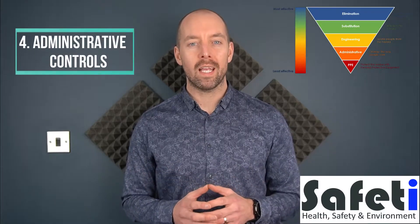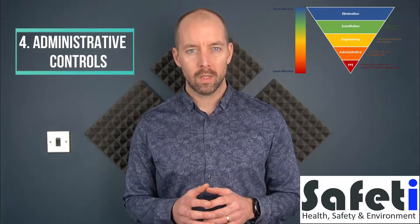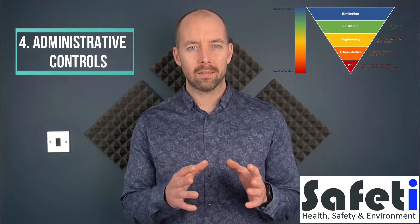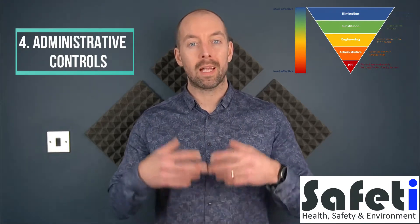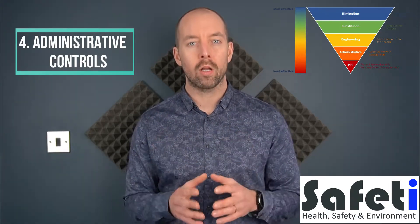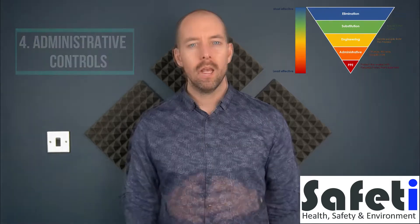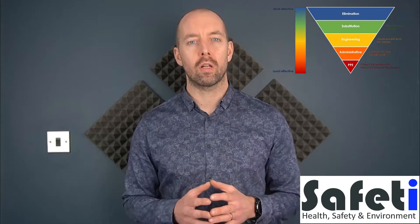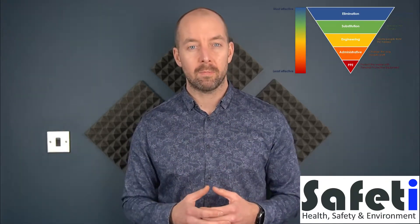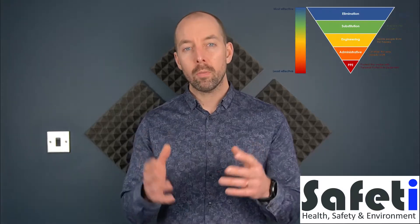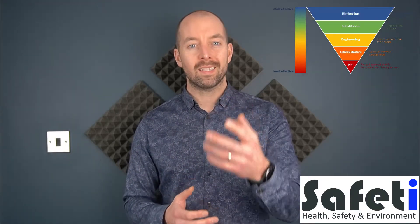The next level on our hierarchy is administrative controls, and these are really checks and balances to influence the way that people carry out their activities and their work within the workplace. Examples of these could be producing specific procedures or systems of work that employees must follow to ensure they don't come to harm, providing specific employee training for the type of activity being carried out, or something as simple as providing signage on the equipment where the hazard exists.